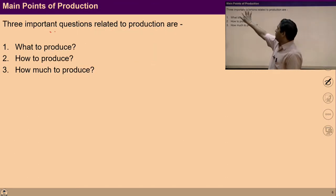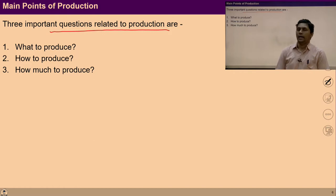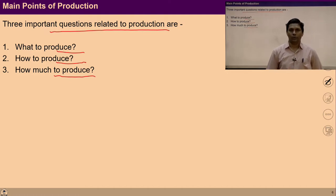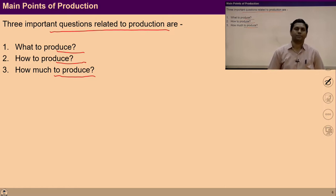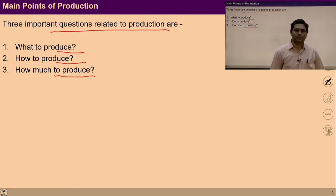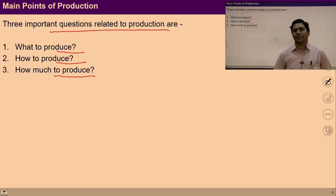The important questions related to production are: what to produce, how to produce, and how much to produce. Ask yourself, take a pause and investigate. Before producing physical facilities, these three questions should be answered. Let's explore all these questions.